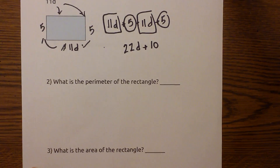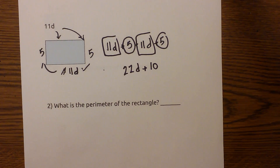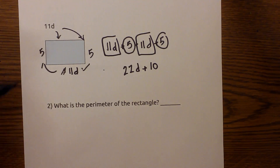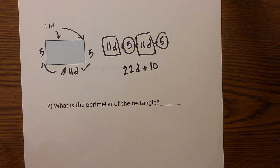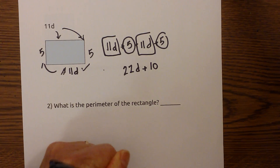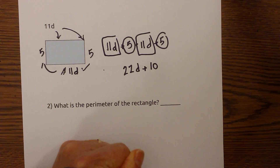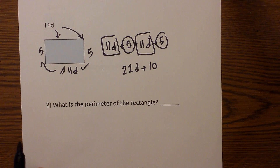Now what about the area of this same rectangle? We know that for area we multiply the sides. So we multiply 11d times 5, and that gives you a grand total of 55d.